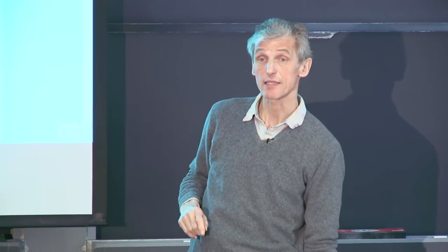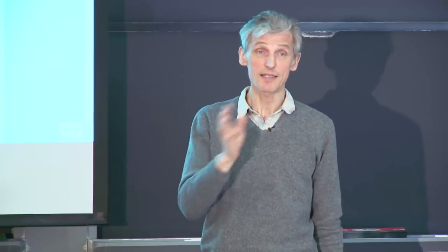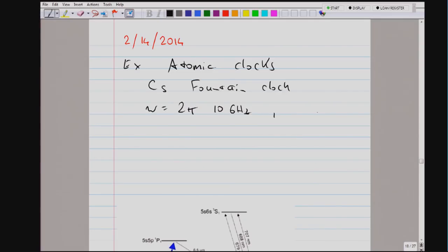You had an atomic cesium beam and interrogated it twice, and the interrogation time is one second. This interrogation time is no longer limited by the thermal velocity of the atom — it's limited by gravity. If you want to increase the time to 10 seconds, you need a 100-meter tower, and nobody wants to build that. So you usually deal with an interrogation time on the order of one second.